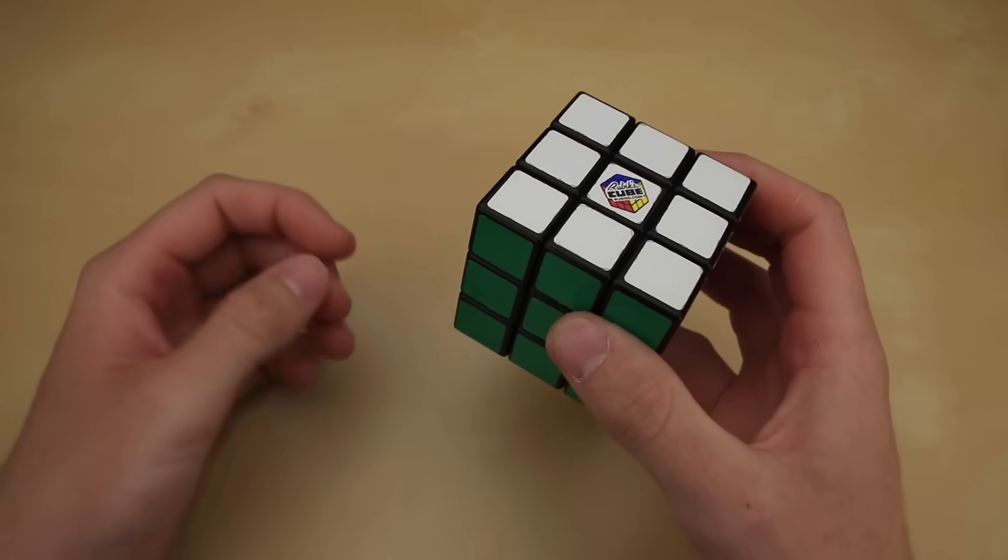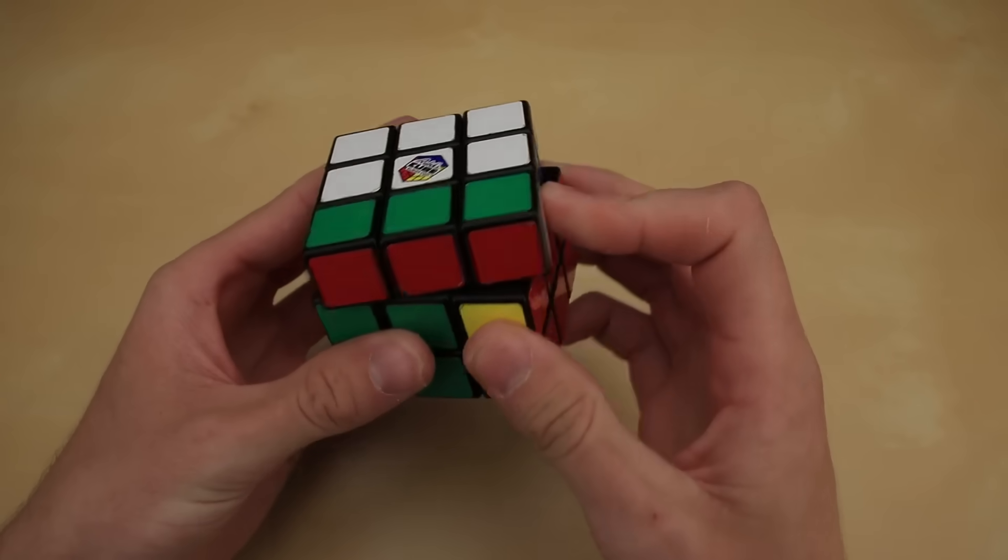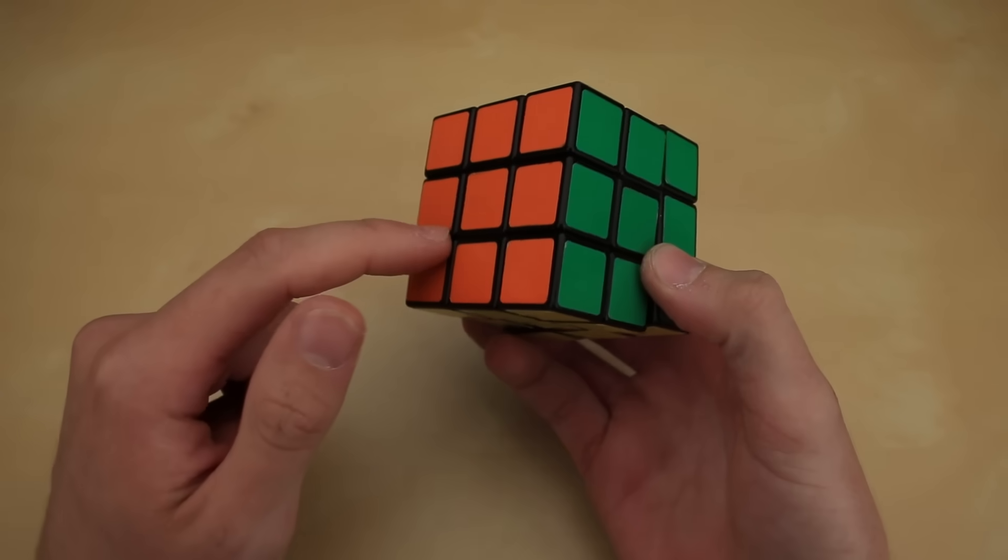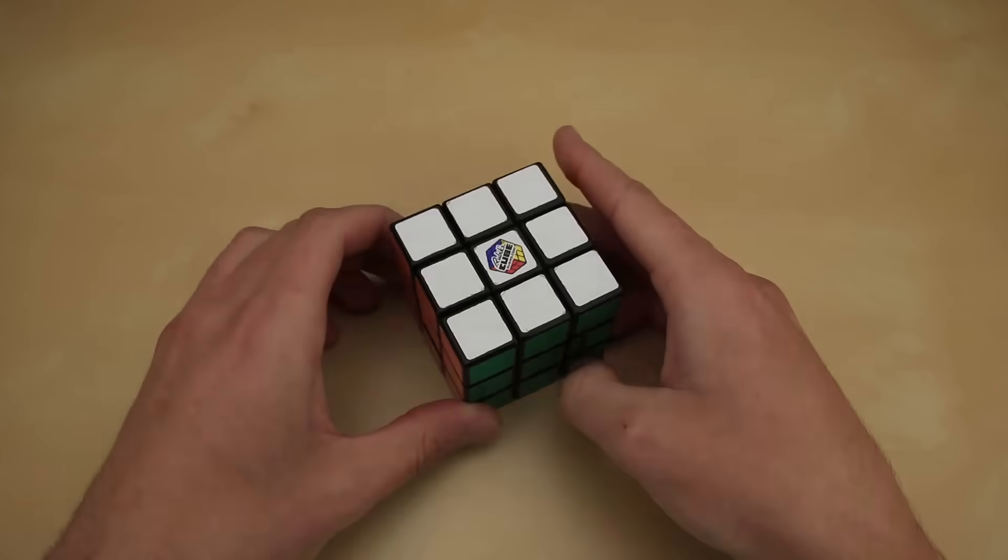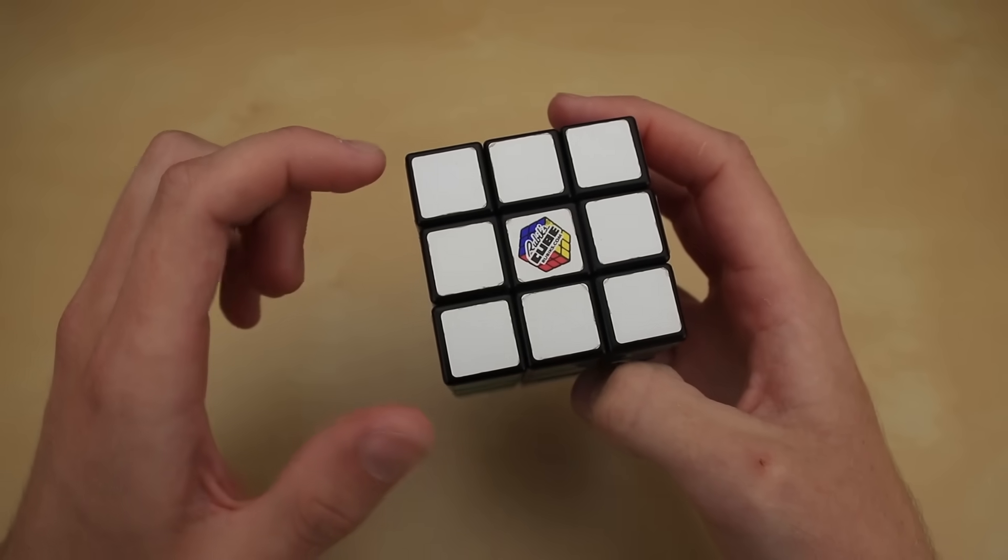Now of course, just like in my lightest cube video, we do have some requirements for this heaviest possible cube. Of course it does have to be a functional 3x3, preferably with stickers so you can solve it. Another pretty obvious requirement is it has to be a standard size of 57 millimeters at the maximum.